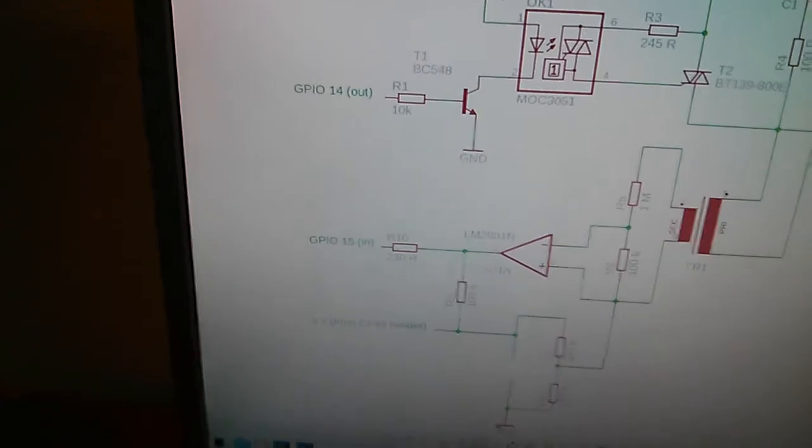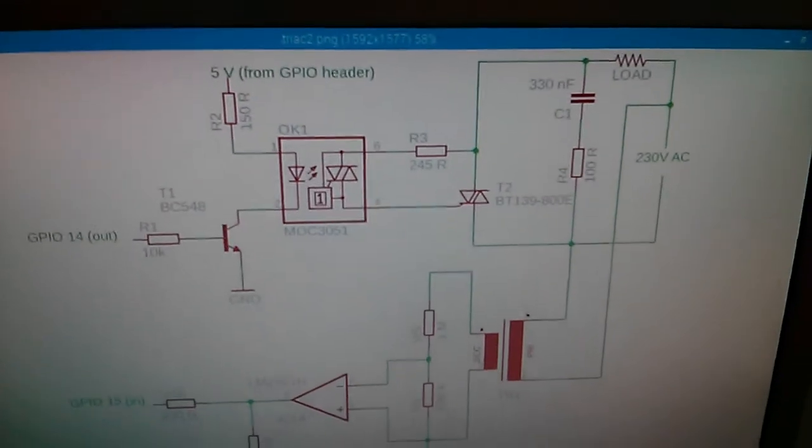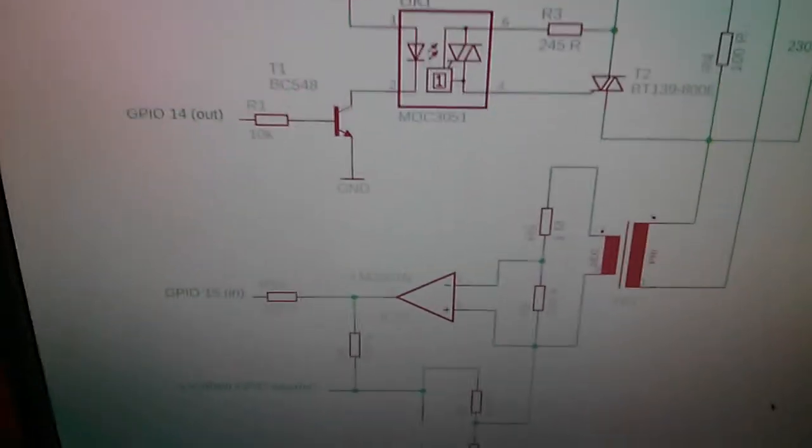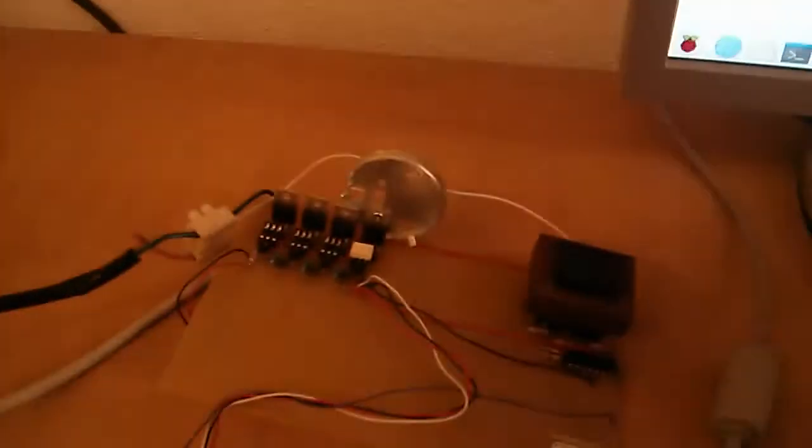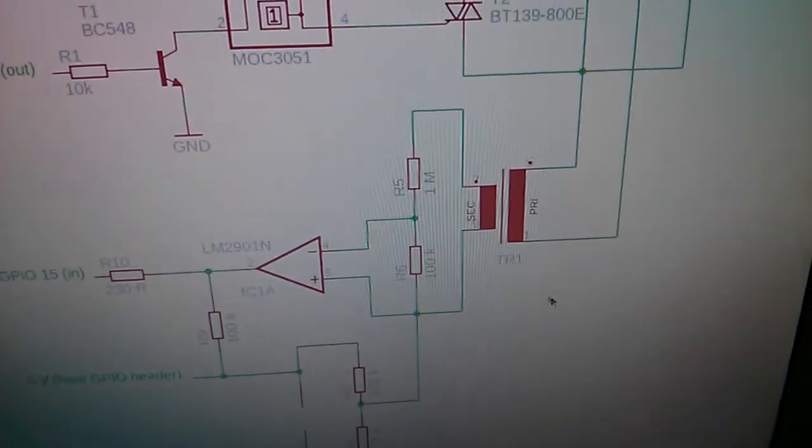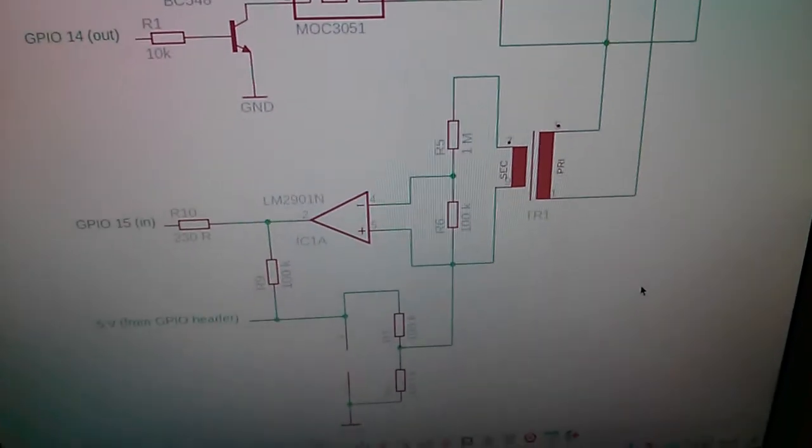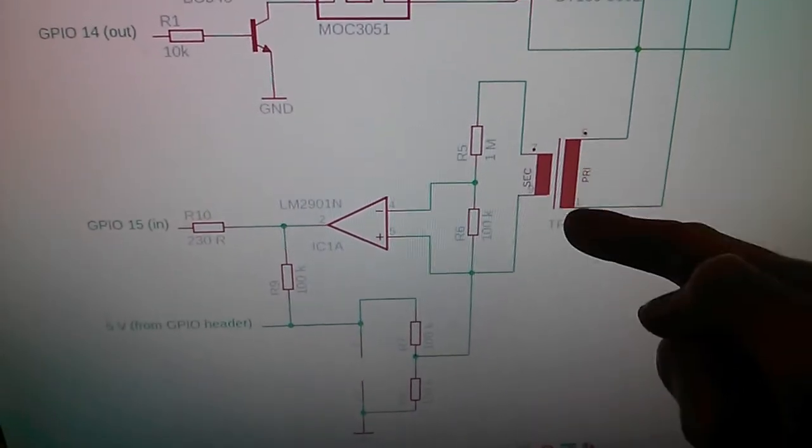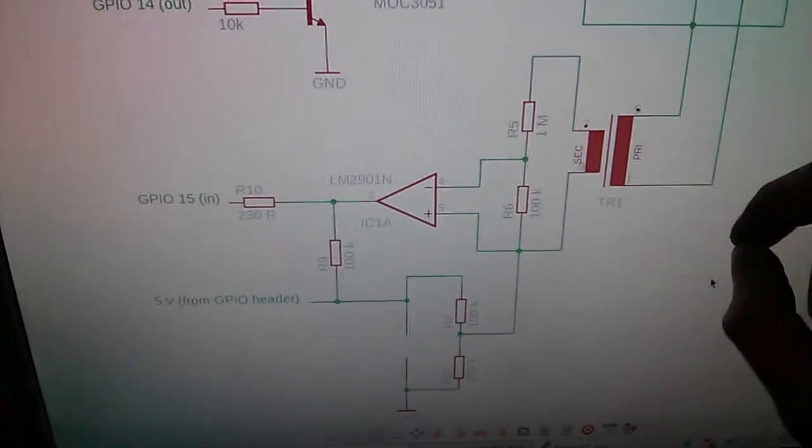And here I'm going to show you the circuit diagram of my dimmer circuit. So the transformer here, which we have right here in real life, does not handle any power. It's just part of a phase detection circuit. So it provides galvanic isolation.